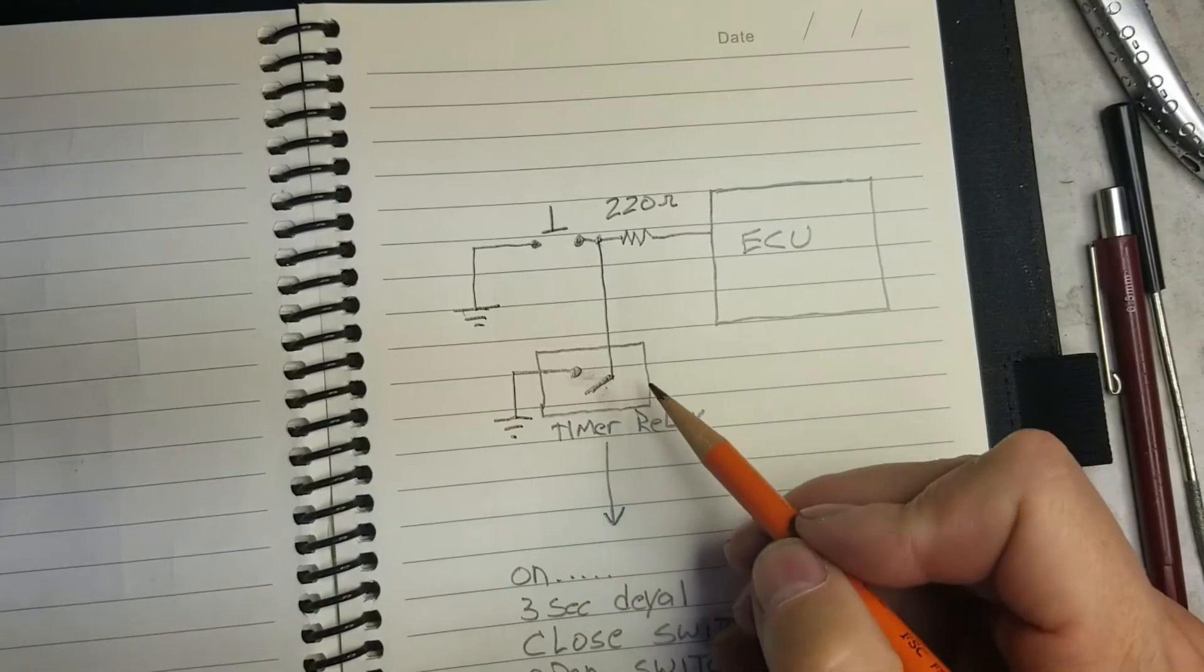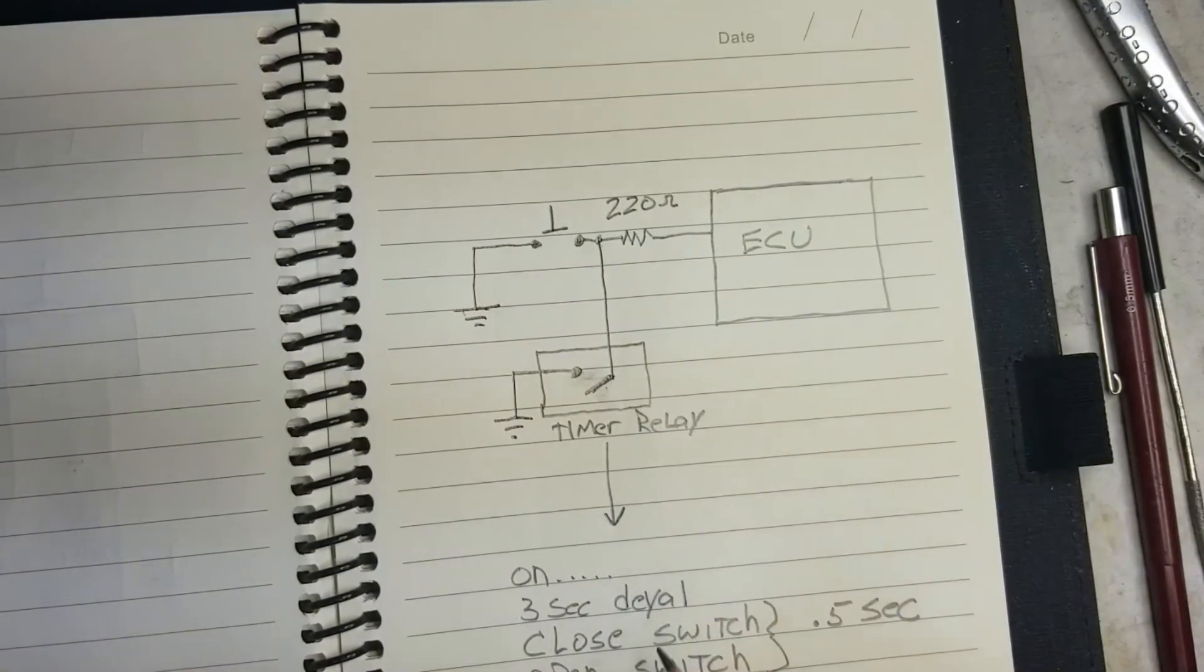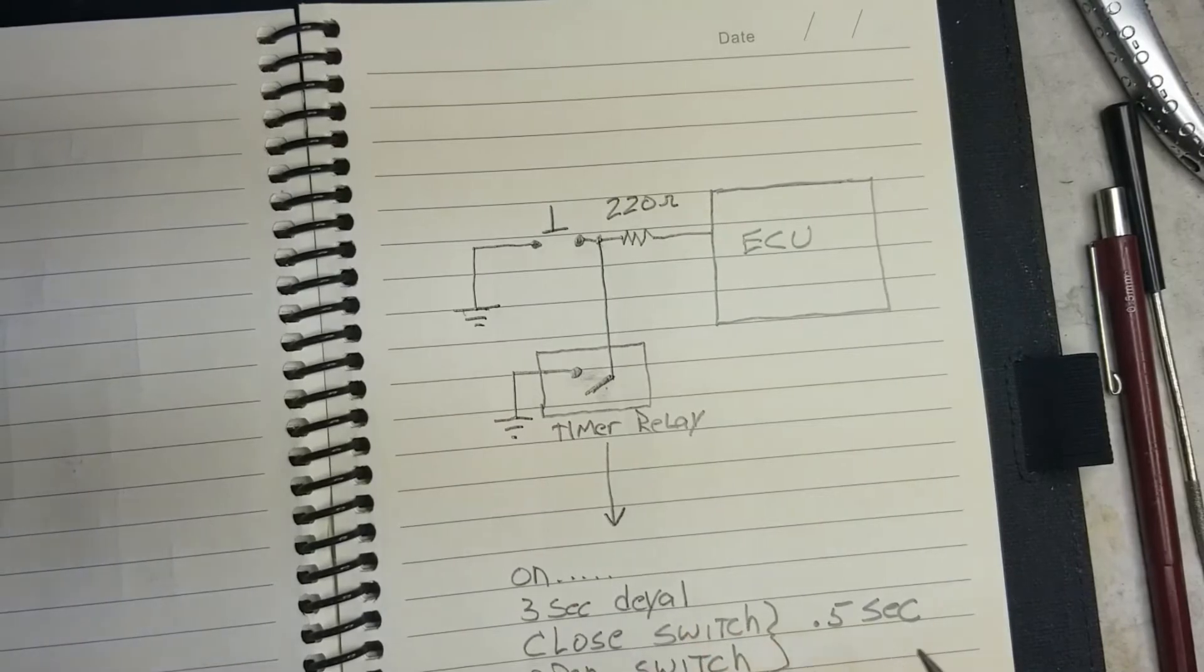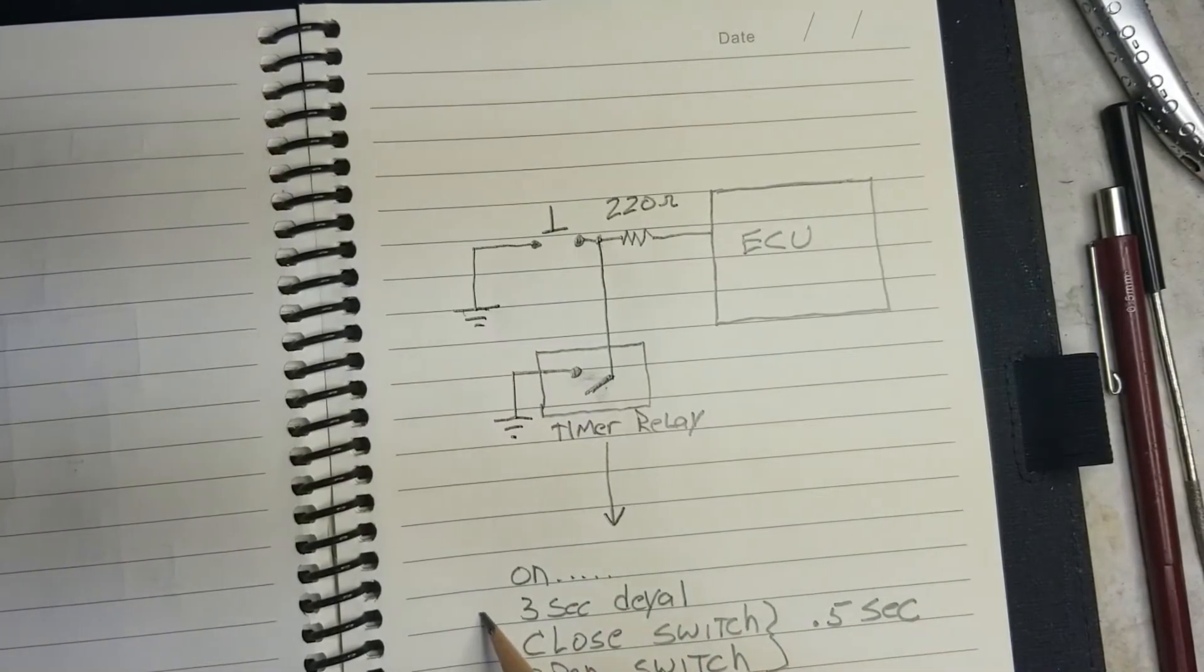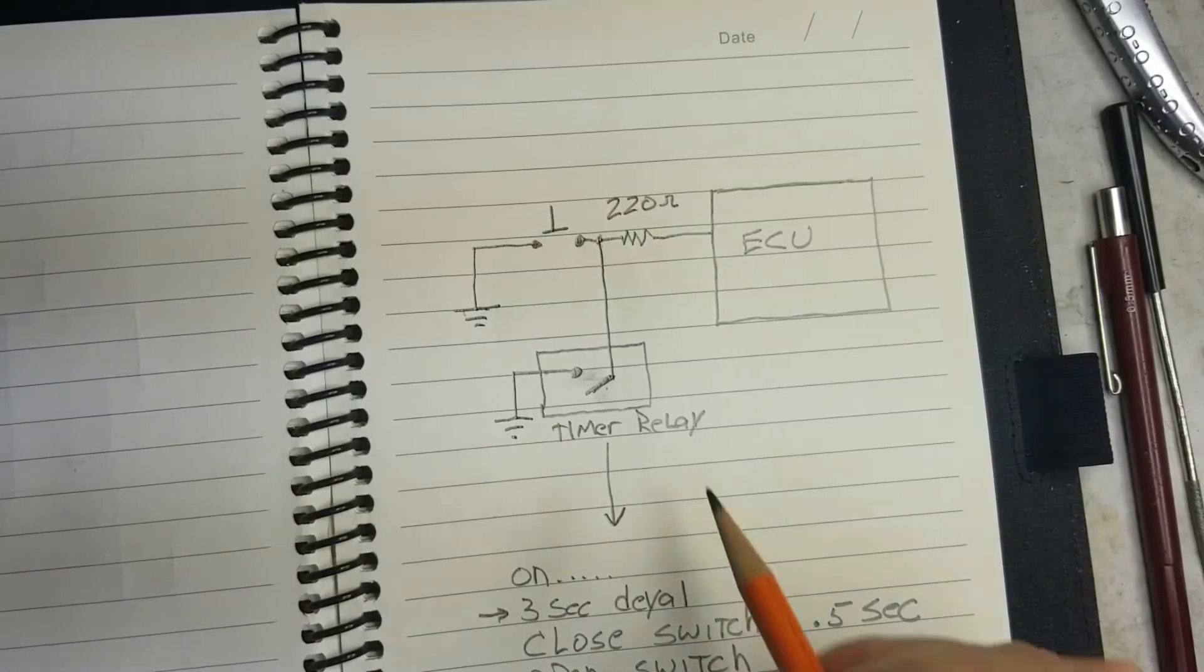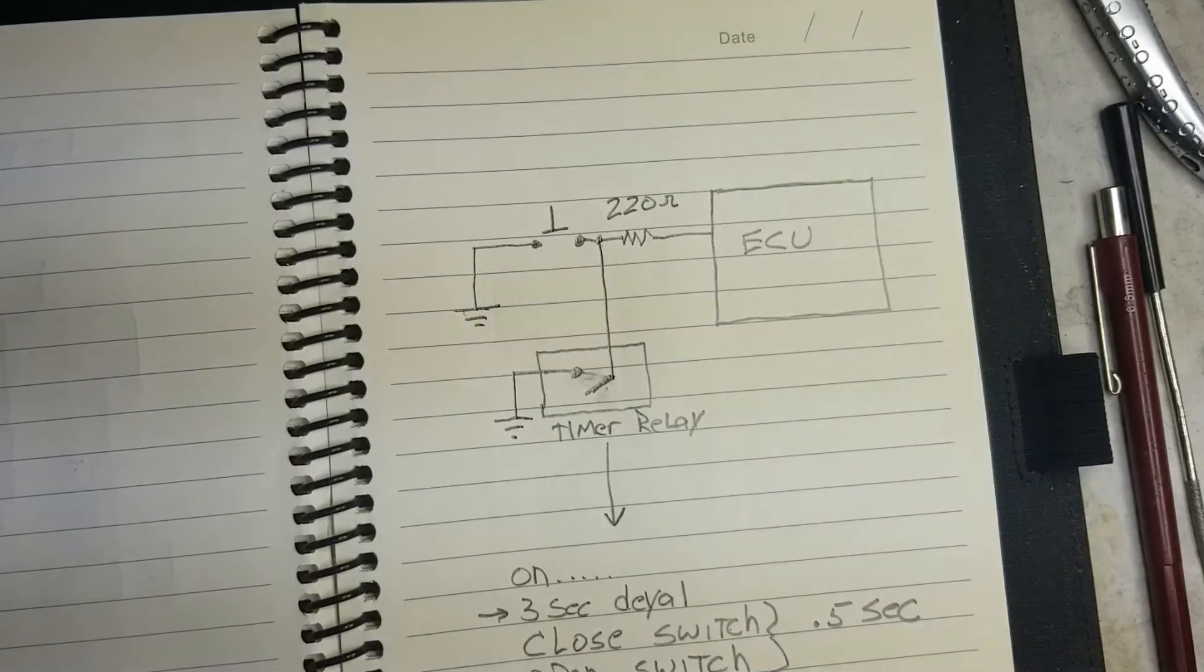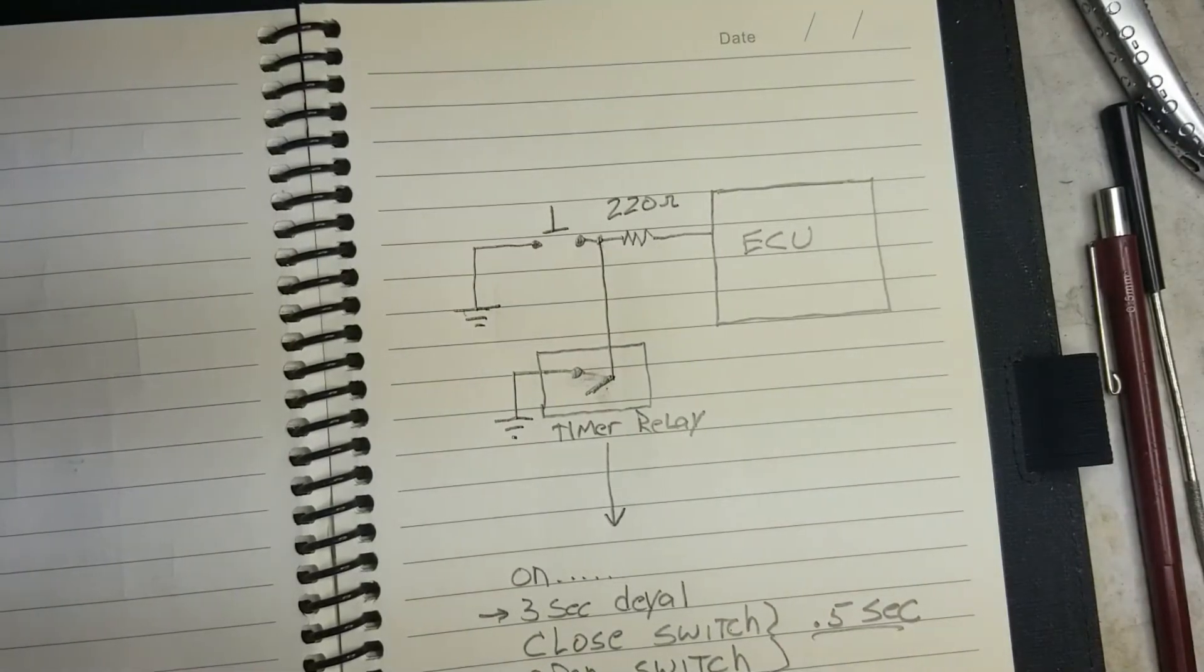Basically, once the timer gets power, i.e. you turn the car on, I've got it set up for a 3 second delay. You can make that 1 second, you can make it 5 seconds, but I found 3 seconds pretty good. After 3 seconds, it closes the switch which means it latches that, which turns off your idle stop and go. And then after a half second, it opens it back up and it's done.